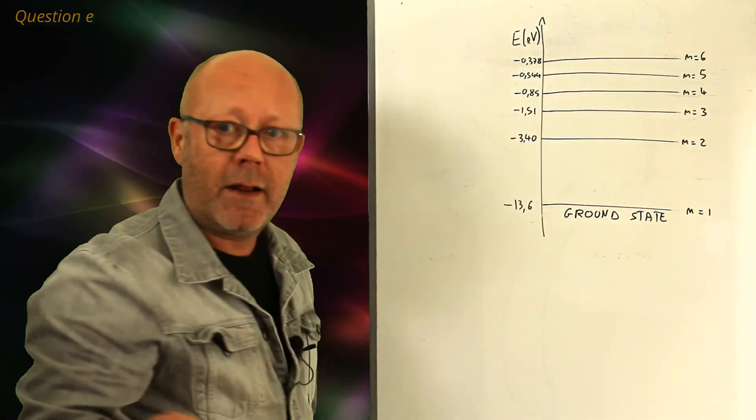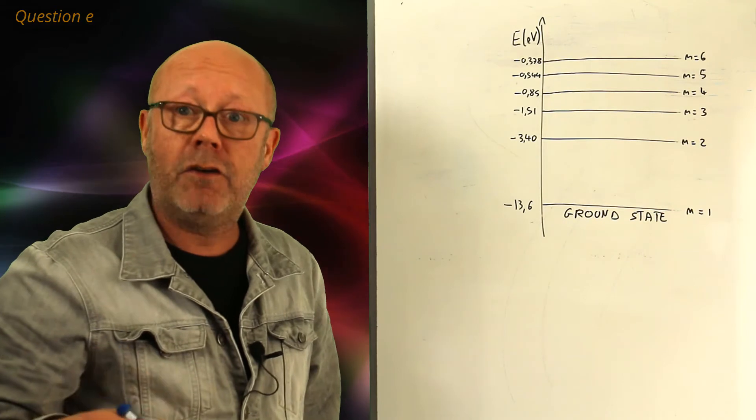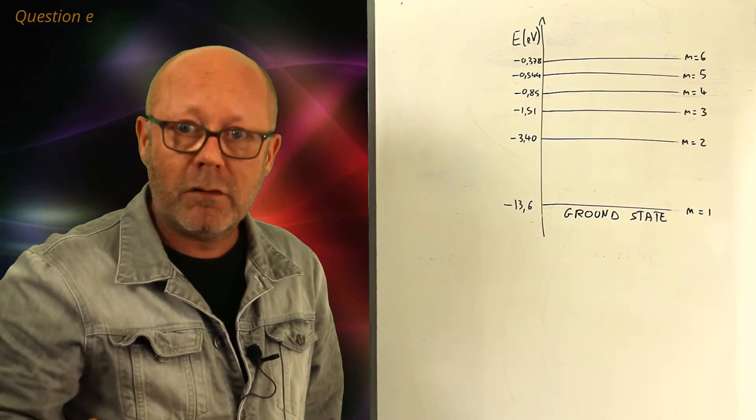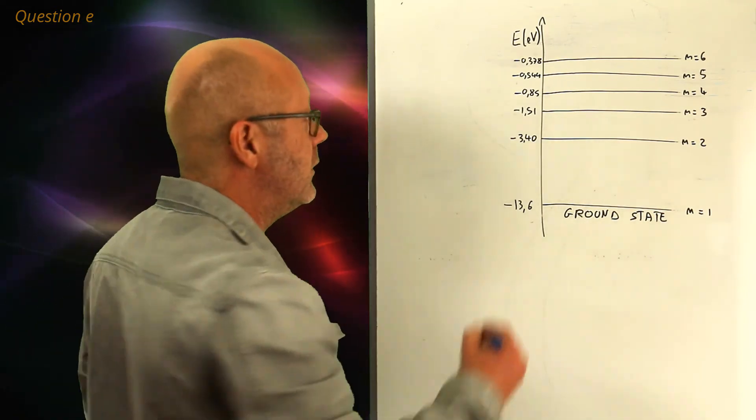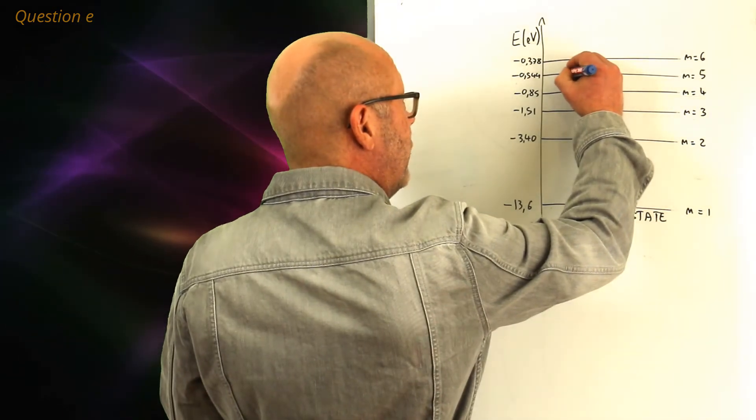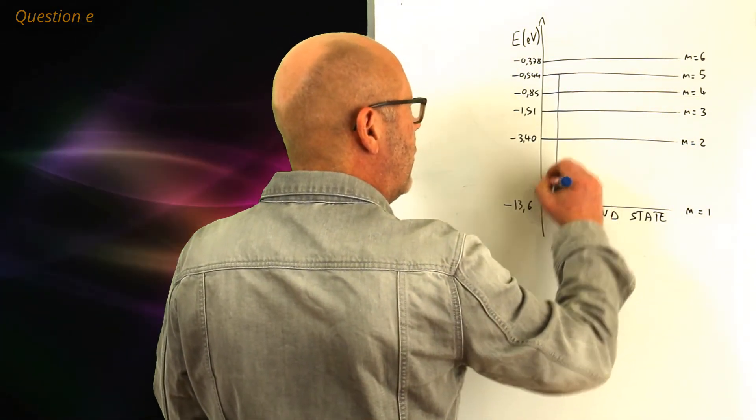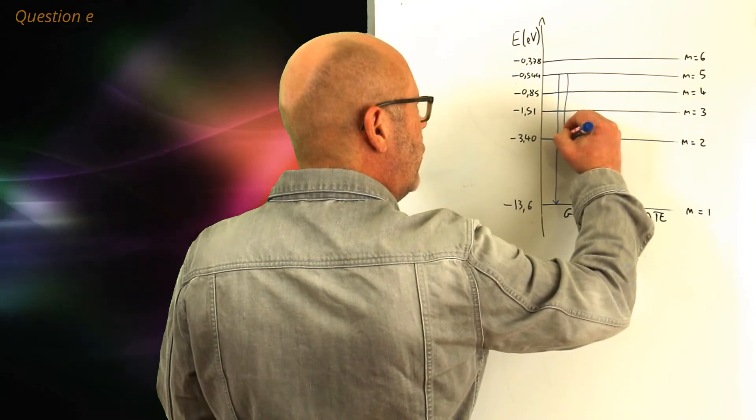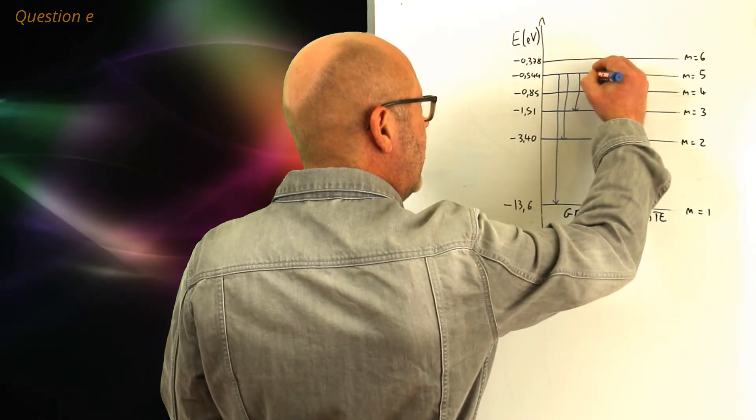Well, now the atom is at level N equals 5. So, it is going to relax, it is going to emit photons, and release energy. So, it goes from, for example, N equals 5 to N equals 1. Or N equals 5 to N equals 2. Or N equals 5 to N equals 3. Or 4.